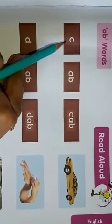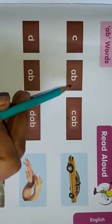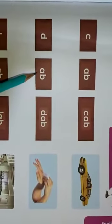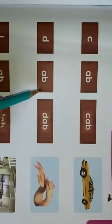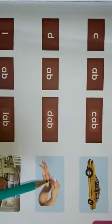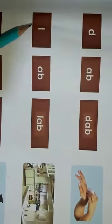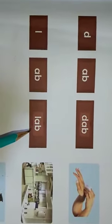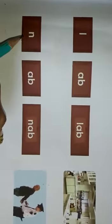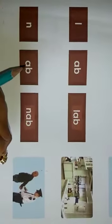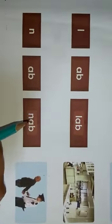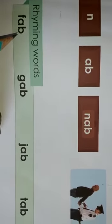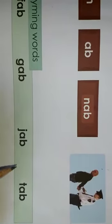C, AB, CAB, CAB. D, AB, DAB, DAB. L, AB, LAB, LAB. N, AB, NAB, NAB. Similarly, we have also read fab, gab, jab, and tab.